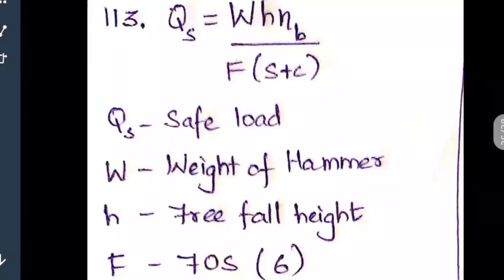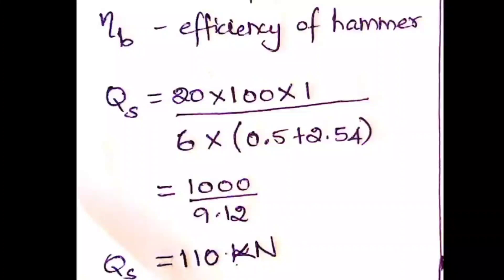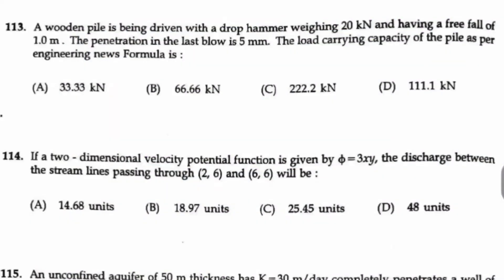Here W is hammer weight, H is free fall height, and ηb is efficiency — taken as 1 since no efficiency value is given. The factor of safety f is always taken as 6 for this formula. s is penetration of pile, and c = 2.54 cm for a drop hammer (0.254 cm for a steam hammer). Substituting all values gives Qs ≈ 110 kN, so option D is the right answer.